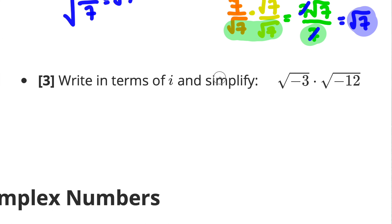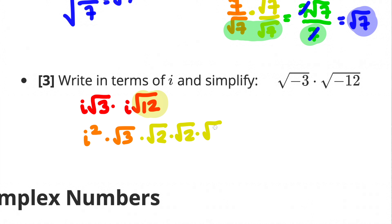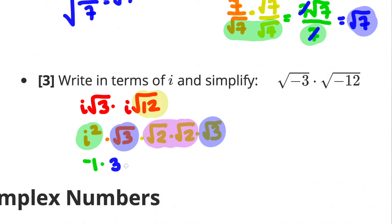The next one says write in terms of i and simplify: √(-3) · √(-12). Factor out i from each: i·√3 · i·√12. That gives i²·√3·√12. Break down √12 = √2·√2·√3. Since i² = -1, combine √3·√3 = 3 and √2·√2 = 2. The final answer is -6.